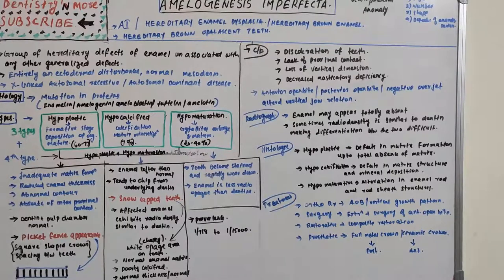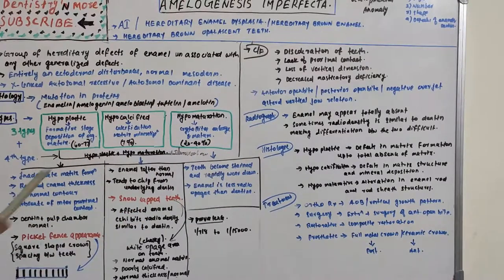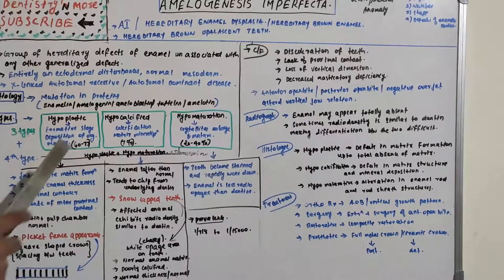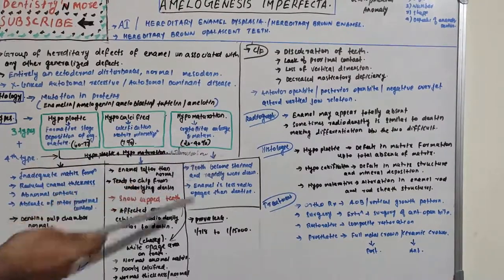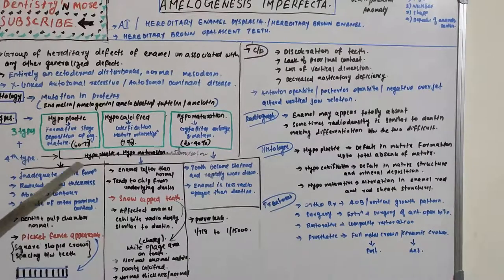There is also a fourth type — a combination of hypoplastic and hypomaturative AI, commonly seen along with taurodontism. Regarding prevalence: hypoplastic is the most common, accounting for 60–73%; hypomaturative accounts for 20–40%; and hypocalcified is the least common at around 7% of total AI cases.